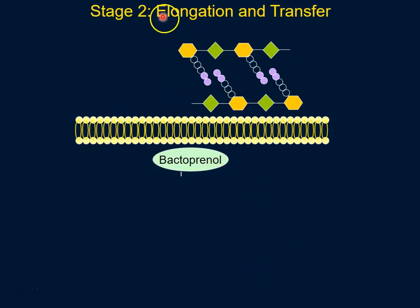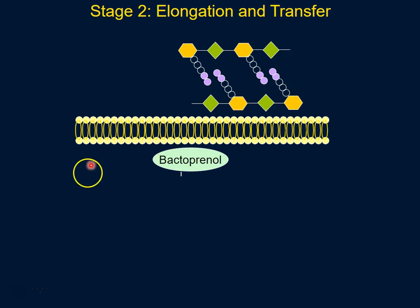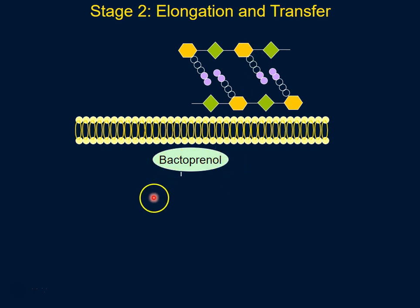Stage two is the stage where the building blocks — the sugars NAG and NAM — are put together outside of the bacterial cell. Here we have the lipid membrane, with the outside and the cytoplasm, and a protein critical for this stage called bactoprenol.